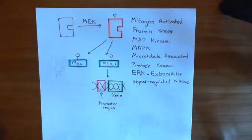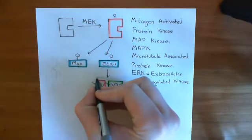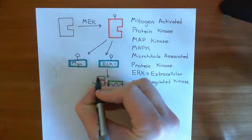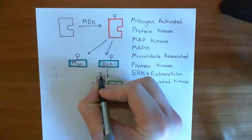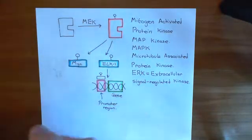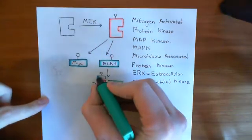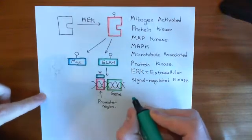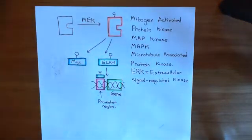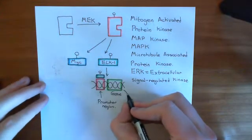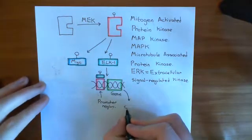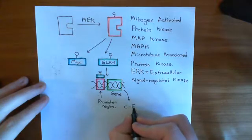What transcription factors do is bind to the promoter region and alter its affinity for RNA polymerase, thereby altering the amount of mRNA produced and thus the expression of the gene. ELK-1 is going to go into the nucleus, bind to the promoter regions of certain target genes, and increase their transcription. One of the genes it increases transcription of encodes a protein known as C-FOS.